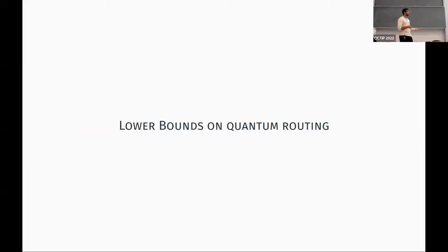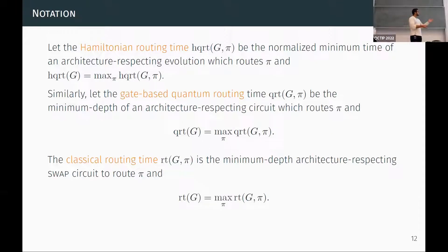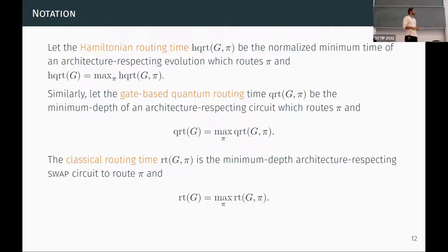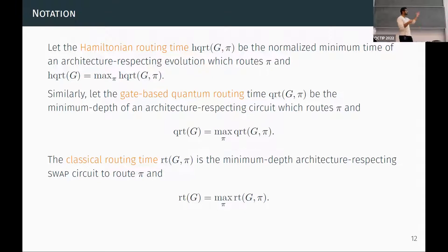Let's talk about lower bounds on quantum routing. We define the routing time for a graph and a permutation as the minimum time of an architecture-respecting evolution that implements that permutation on that graph. We also overload the notation: the routing time for a graph is defined as the maximum over all permutations — that is, the time for the hardest or worst permutation. We can define analogous routing times in the gate-based model and the classical swap model.